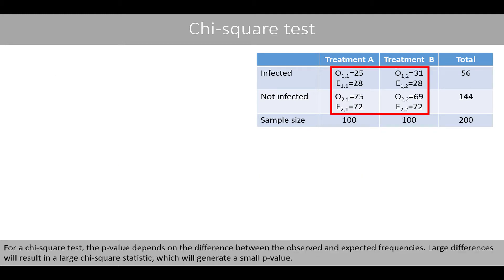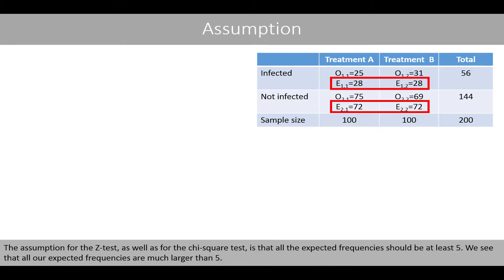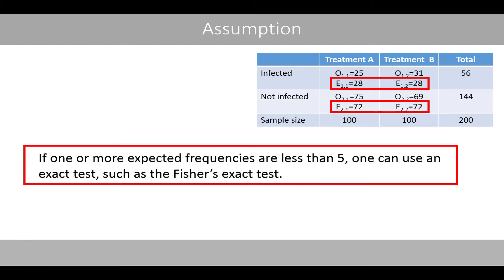For a chi-square test, the p-value depends on the difference between the observed and expected frequencies. Large differences result in a large chi-square statistic and a small p-value. The assumption for both the z-test and the chi-square test is that all expected frequencies should be at least 5. We see that all our expected frequencies are much greater than 5. If one or more expected frequencies are less than 5, one can use an exact test such as Fisher's exact test.